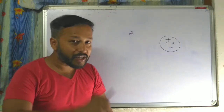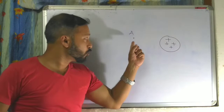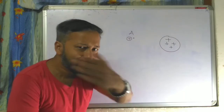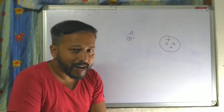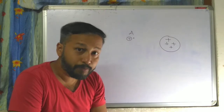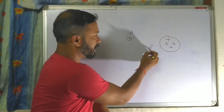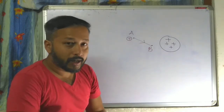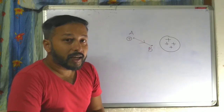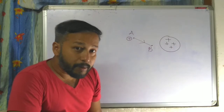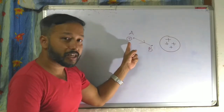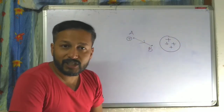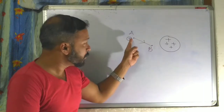Now your positive charge is at point A. Another task: you have to take this positive charge from A to B. The amount of work done to take a unit positive charge from one point to another point of a charged field is called the potential difference between these two points.